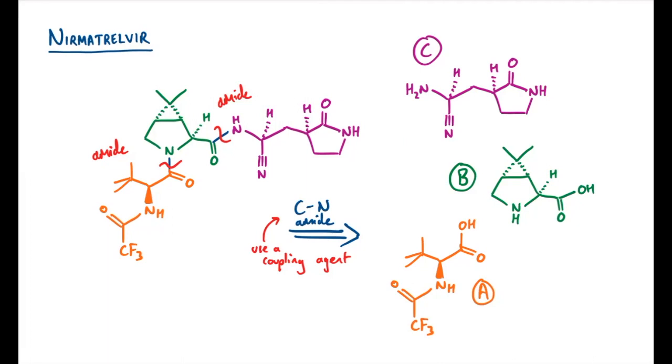Right then, so now we have an idea of how we might do some of the coupling steps. Let's have a look at how we might make some of these fragments. One thing we're going to have to keep a real eye on is these alpha stereocenters on fragments A and B.